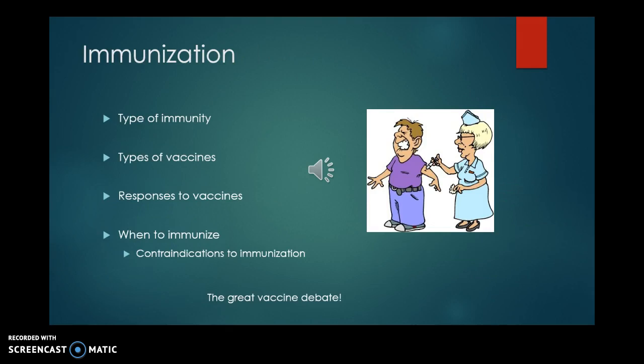Immunization has been a hot topic because there are people who are not vaccinating their children. One thing to consider is what type of immunity a vaccine stimulates — it's given to stimulate an immune response. Vaccines are classified as live or attenuated, which is a dead virus or virus parts. Responses to vaccines vary: most people have no response, sometimes there's a localized response. The MMR, which is a live shot, may trigger a low-grade fever. You cannot get the flu from the flu shot.